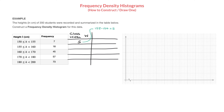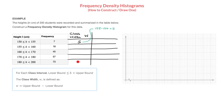Doing the same thing for each row: the next class width is 160 minus 155, which is 5 again. Then 170 minus 160, which is 10. Next, 180 minus 170, which is 10 again. And finally, 200 minus 180, which is 20. We now have all of our class widths.